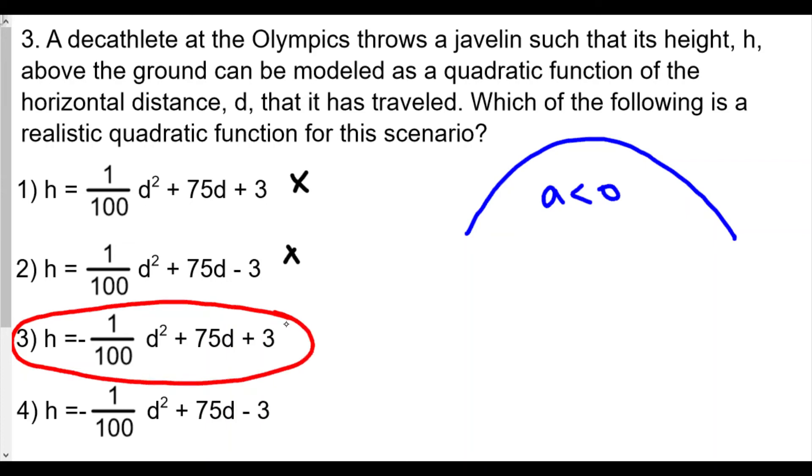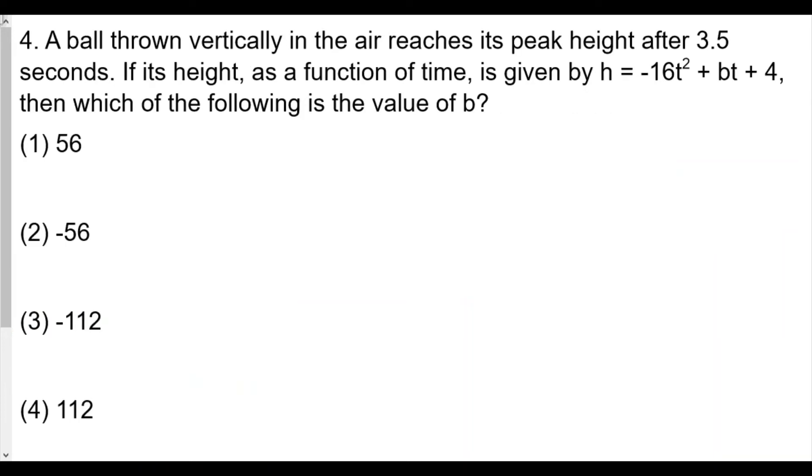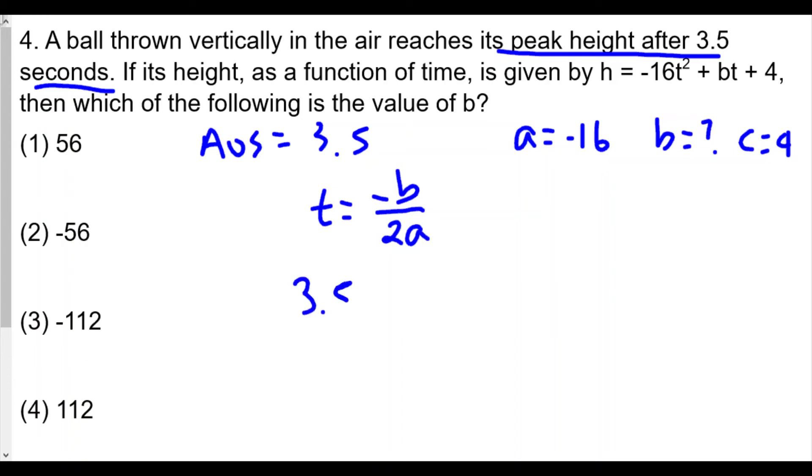A ball thrown vertically in the air reaches its peak height after 3.5 seconds. If its height as a function of time is given by h(t) = -16t² + bt + 4, which of the following is the value b? The peak height after 3.5 seconds means the axis of symmetry equals 3.5. Our a-value is -16, our b-value is b (which we don't know), and c is 4. So t = -b/(2a). We know that the time to reach its highest point is 3.5, and we do not know what b is, so we leave it as b.